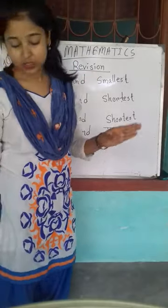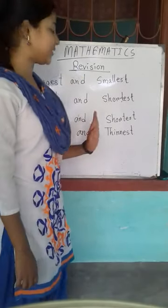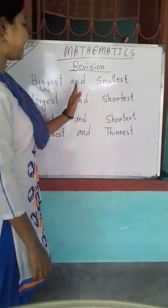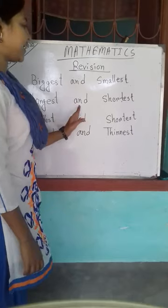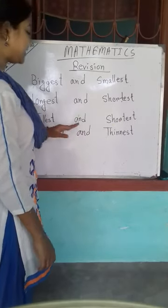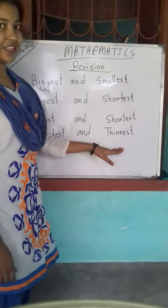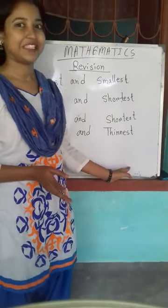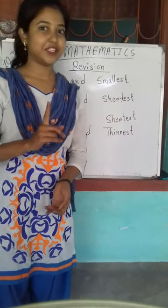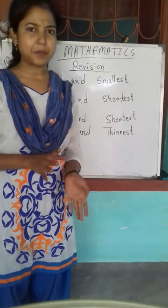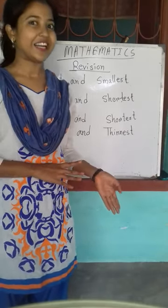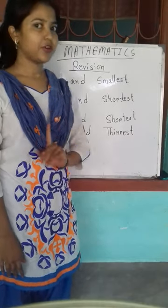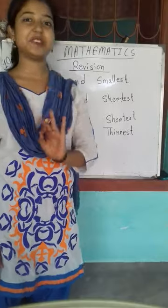So in our Mathematics books, the first four pages — I already learnt those names. That means in this Mathematics book, the first four pages are Biggest and Smallest, Longest and Shortest, Tallest and Shortest, and Thickest and Thinnest. These four pages are kind of similar and have similarity. That's why I chose all these four pages together, because it's a revision class and these four pages are very simple, very easy to understand, and you have already learnt that lesson. If you have any problem, ask me questions about which part you didn't understand.